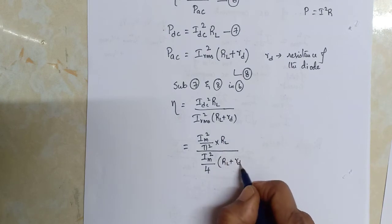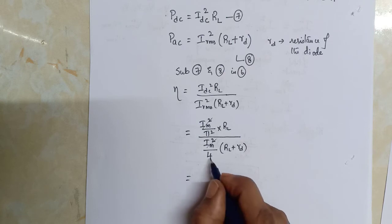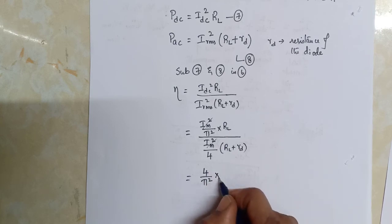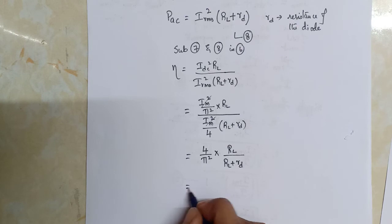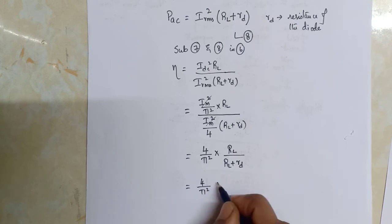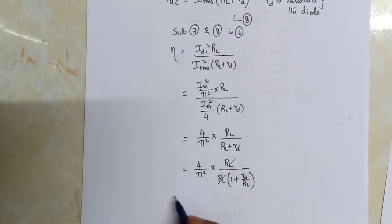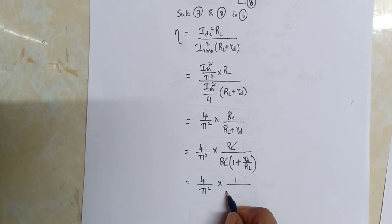These two are in the numerator, so if I simplify this, this 4 will go to the numerator. We get 4/π² into RL/(RL + Rd). I simplify this as 4/π² × RL divided by RL/(RL + Rd). I can cancel this RL, we get 4/π² into 1/(1 + Rd/RL).